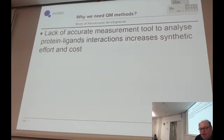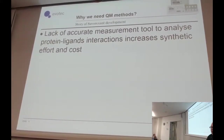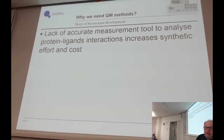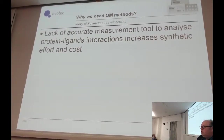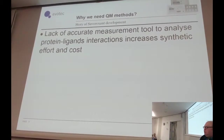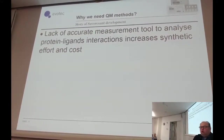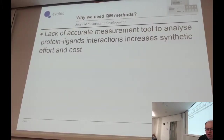I'll tell you the story of a drug for insomnia — Suvorexant — developed by Merck. The key message is that if you don't have a method that will help you understand the interaction between the protein and the ligand, you will do a lot of effort to optimize your compound. And if you look at the publications on the development of this drug by Merck, you can see a lot of effort.